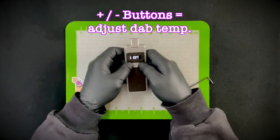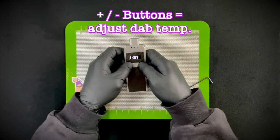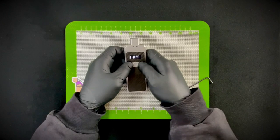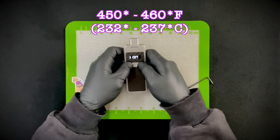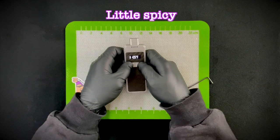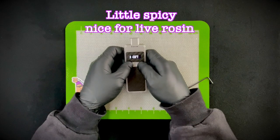And your plus and minus will adjust the temperature that you're going to take your dab. When I first got the device I was running around 450 and 460, which is pretty good. It was a little spicy but it was really nice for live rosin.